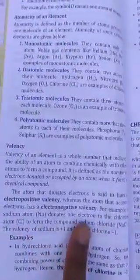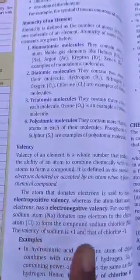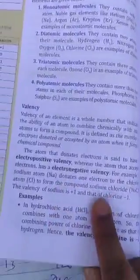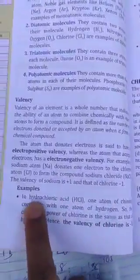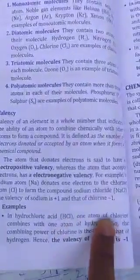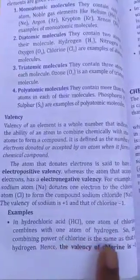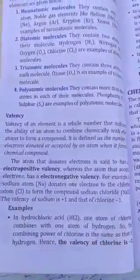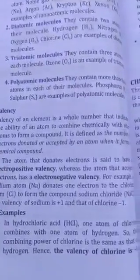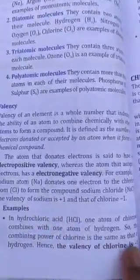The atom that donates electrons is said to have electropositive valency, and the atom that accepts electrons has an electronegative valency. For example, in hydrochloric acid, HCl, one atom of chlorine combines with one atom of hydrogen, so the combining power of chlorine is the same as that of hydrogen. Remember, a chlorine atom combines with one atom of hydrogen, so the valency of chlorine is taken as minus one.